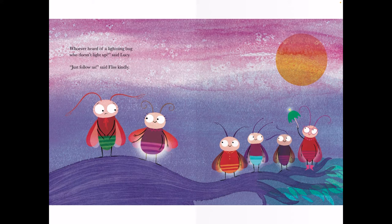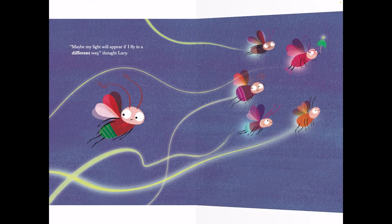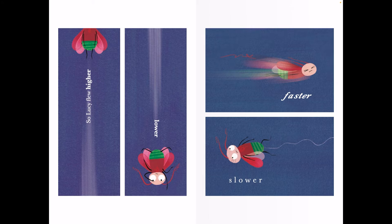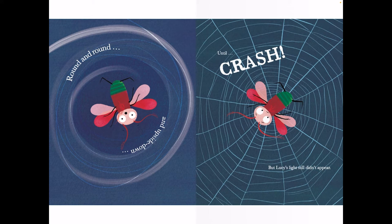Whoever heard of a lightning bug who doesn't light up, said Lucy. Just follow us, said Fliss kindly. Maybe my light will appear if I fly in a different way, thought Lucy. So Lucy flew higher, lower, faster, slower. Round and around and upside down until crash. But Lucy's light still didn't appear.